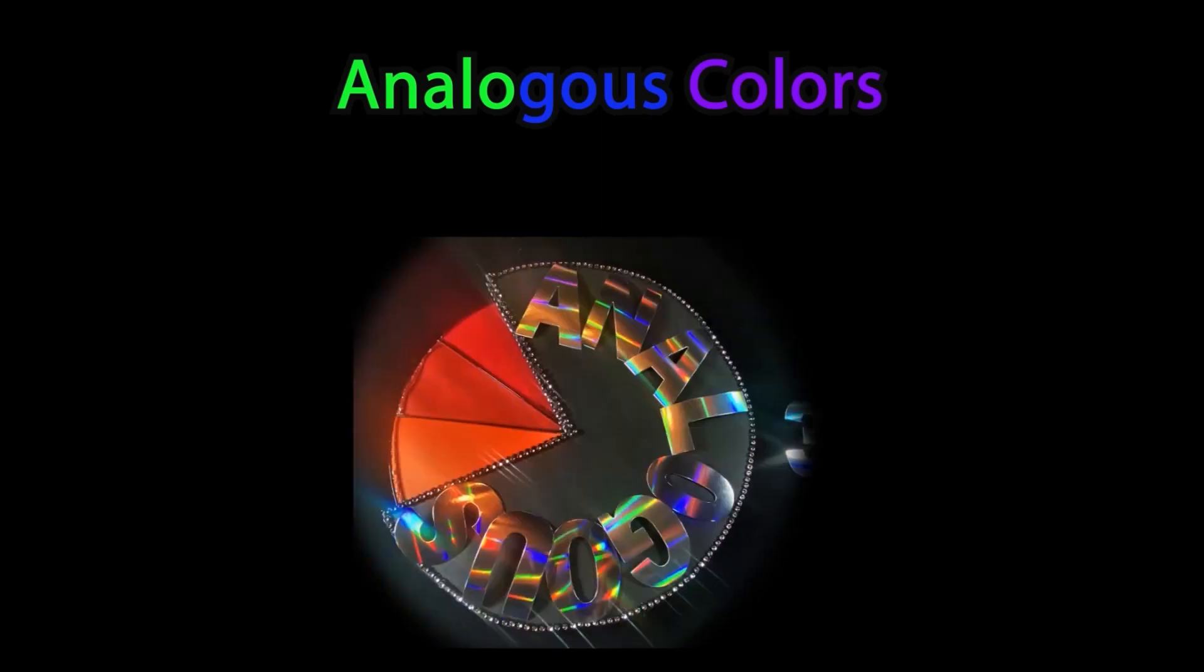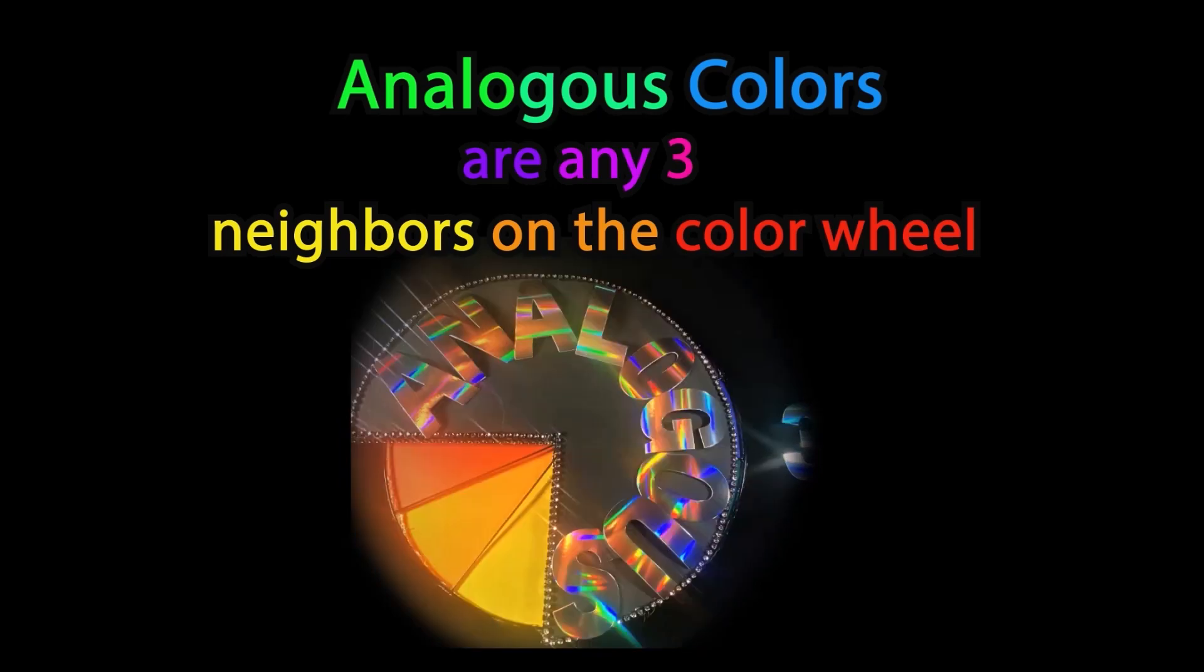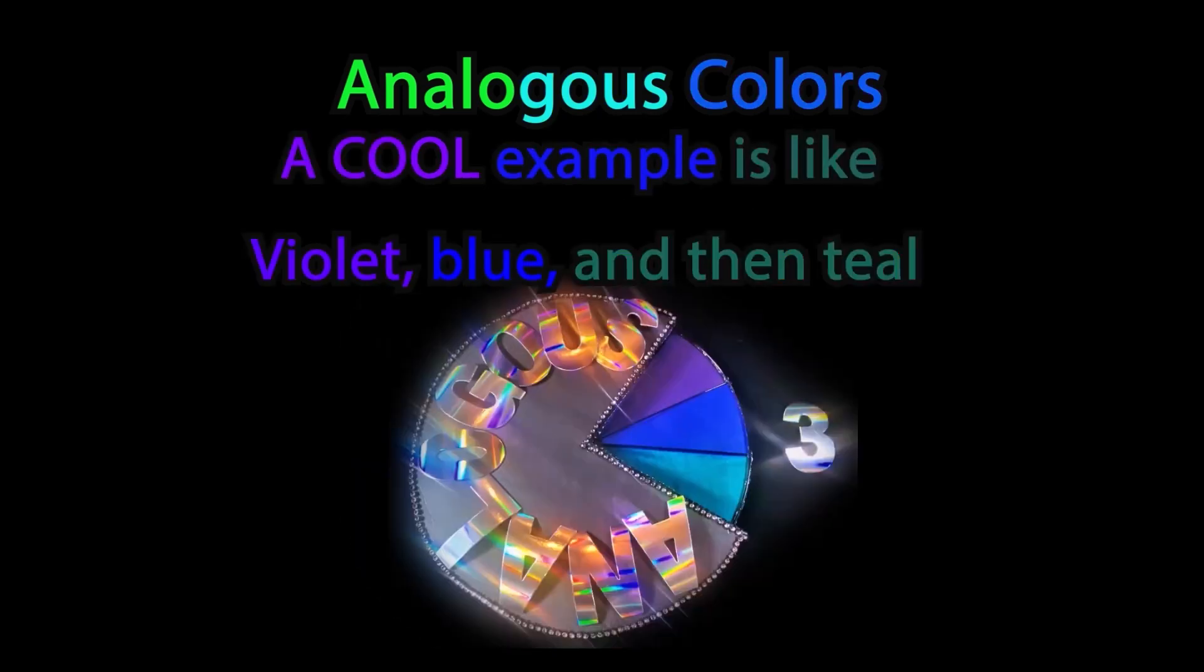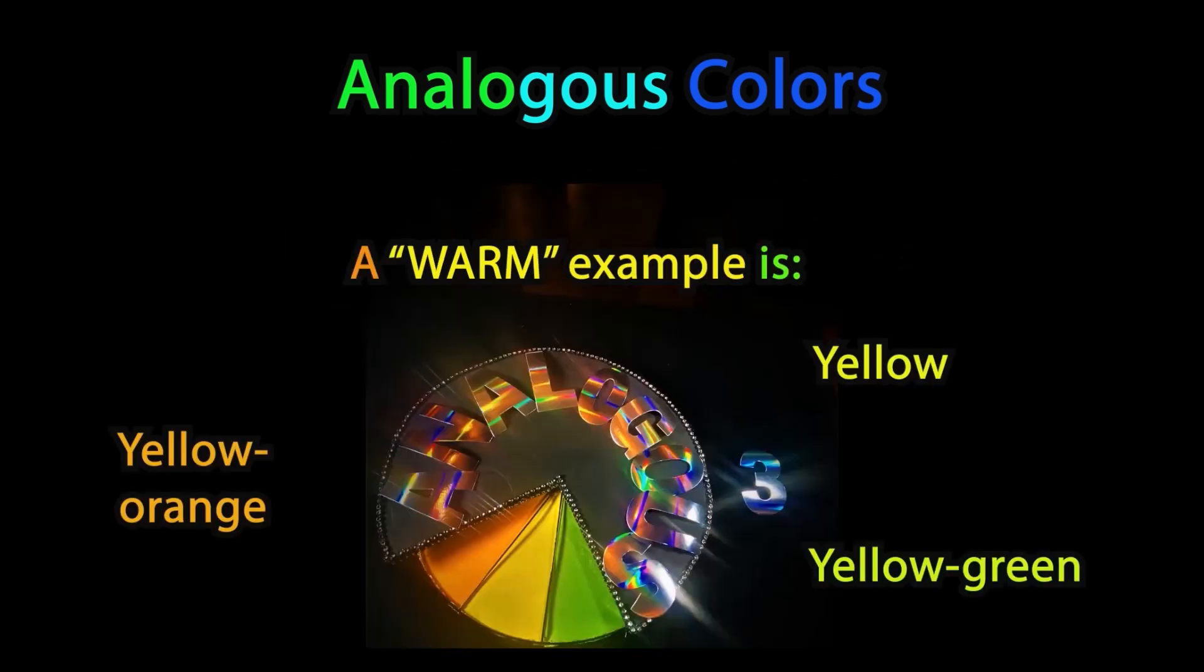Analogous colors. Analogous colors are any three neighbors on the color wheel. A cool example is like violet, blue, and then teal. Think primary and secondary and what's in between. A warm example is yellow-orange, then yellow, followed by yellow-green.